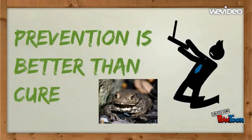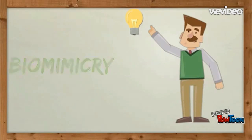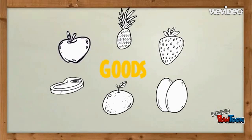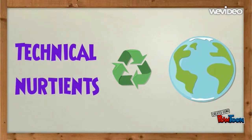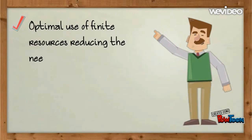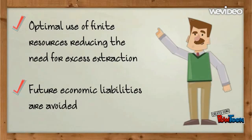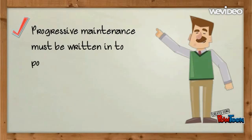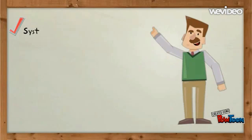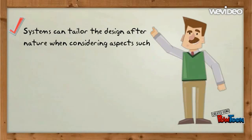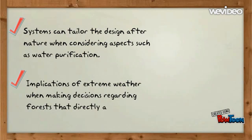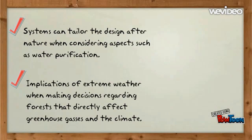Prevention is better than cure, as shown in the previous case study on toads. Biomimicry can inspire innovation whereby systems and goods are designed with their future life in mind. Goods would be made either entirely of biological nutrients that can decompose and feed lower trophic levels, or homogeneously of technical nutrients so they can be recycled indefinitely without reduction of grade. This results in optimal use of finite resources, reducing the need for excess extraction, and future economic liabilities are avoided. Ongoing progressive maintenance must be written into policies to prevent policy avoidance and eliminate or minimise detrimental economic and environmental impacts. Systems such as mining and town planning can tailor their design after nature when considering aspects such as water purification. It is important to note the implications of extreme weather conditions such as ENSO when making decisions regarding forests that directly affect greenhouse gases.